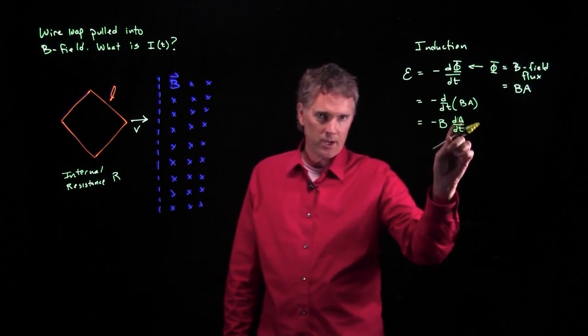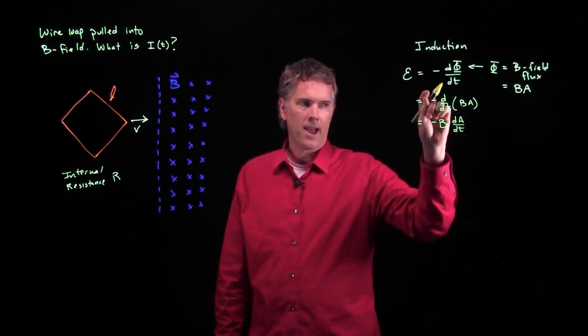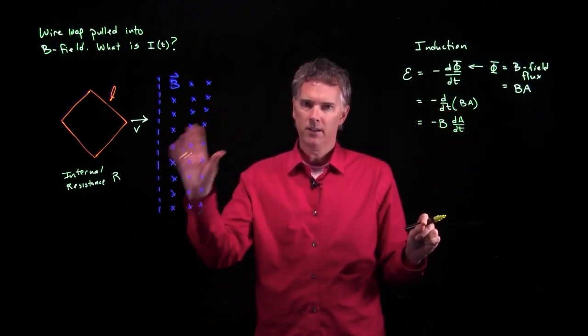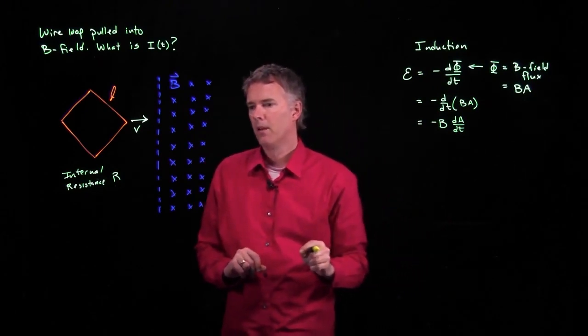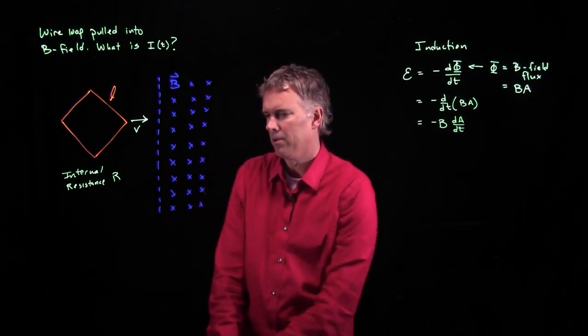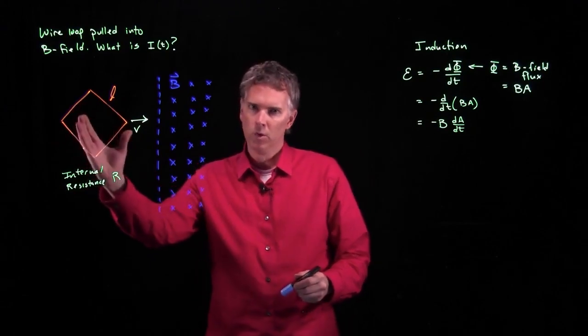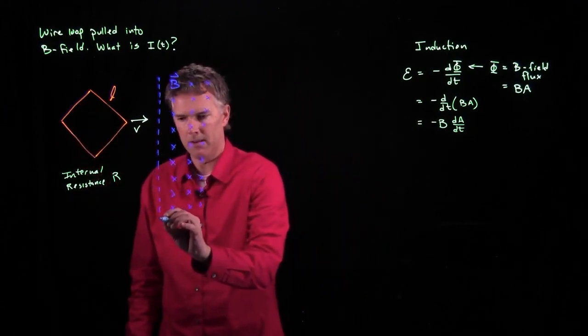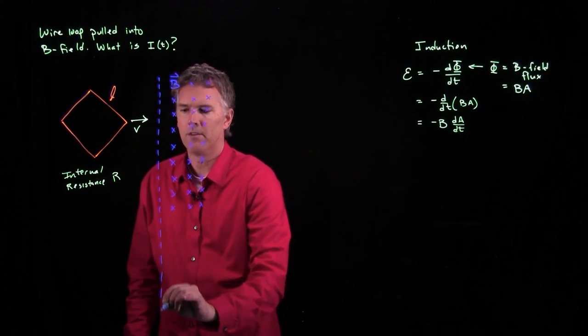So this area is key. We got to figure out how much area is intercepting B field. Maybe we can do that. If I think about this loop coming across this plane, what can I say?